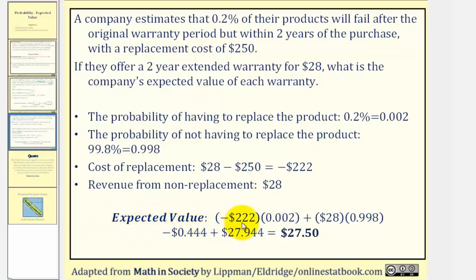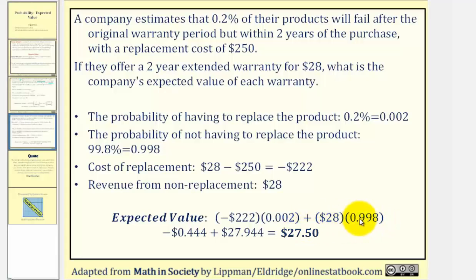The expected value is going to be equal to the replacement cost of negative $222 times the probability of replacing the item, which as a decimal is 0.002, plus the extra revenue from not having to replace the item, which is $28 — the cost of the warranty — times the probability of not having to replace the product, which as a decimal is 0.998. The first product comes out to negative $0.444. The second product comes out to $27.944. And the sum, which is the expected value, is $27.50.